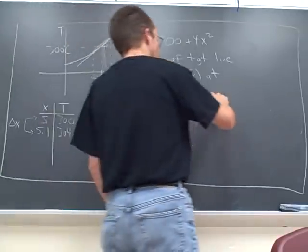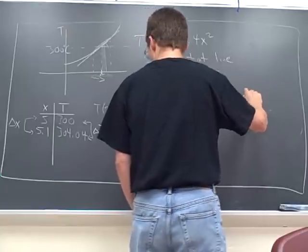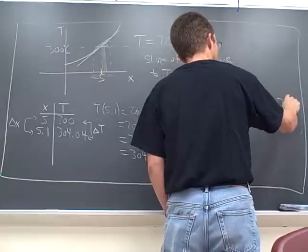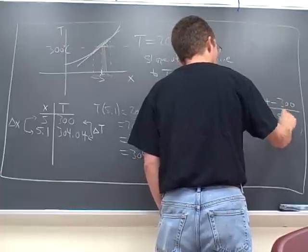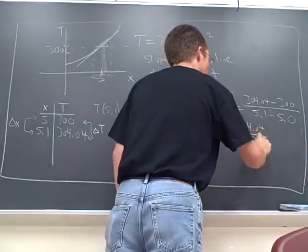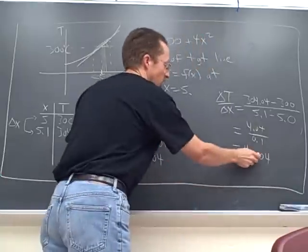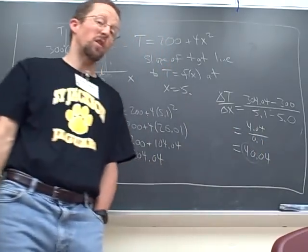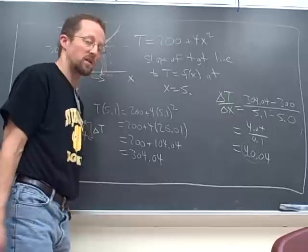So we're going to take delta T over delta x is 304.04 minus 300 over 5.1 minus 5.0. That's 4.04 over 0.1, that's 40.4. So it's suggestive of maybe that's the right answer because we've had this phenomenon that sometimes the right answer is actually a sprightly simple number. And we're going to see that in fact that's what we're going to get for the exact answer.